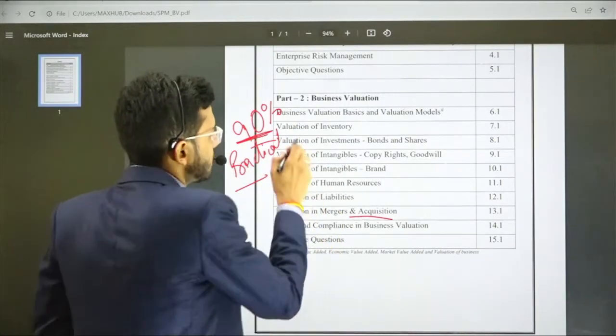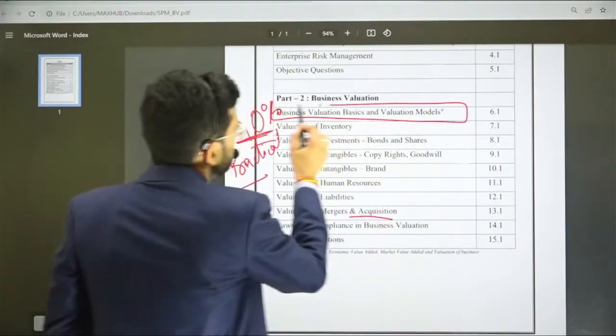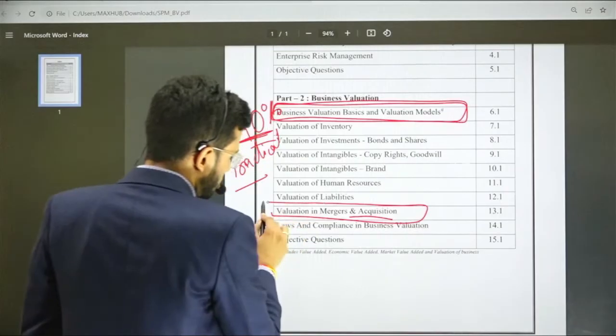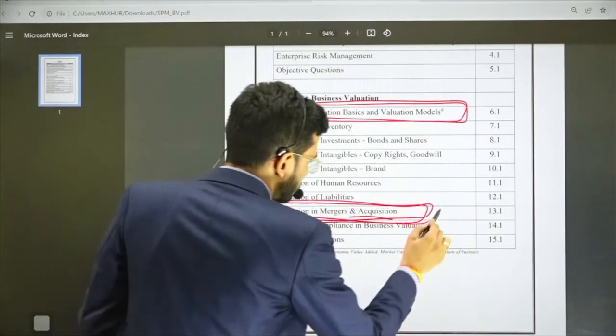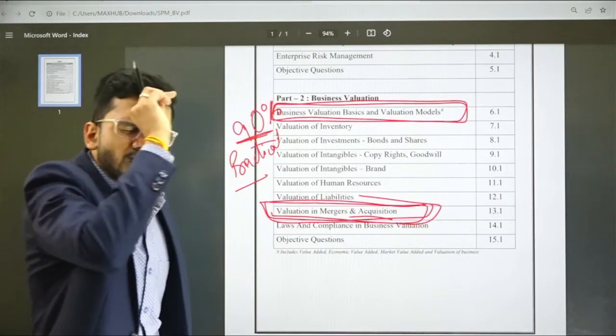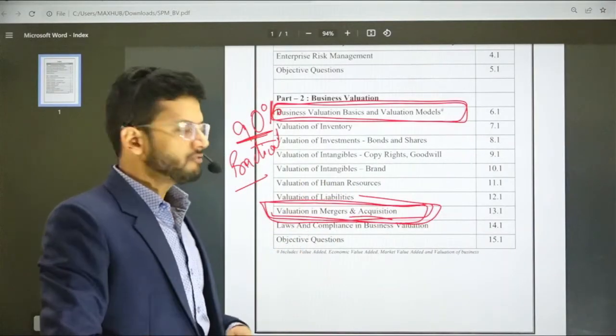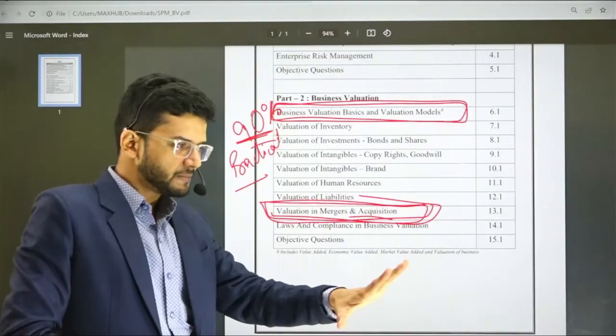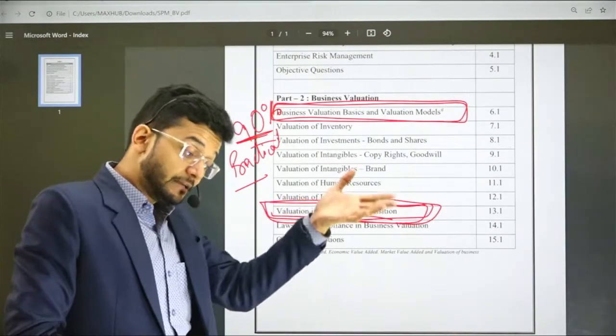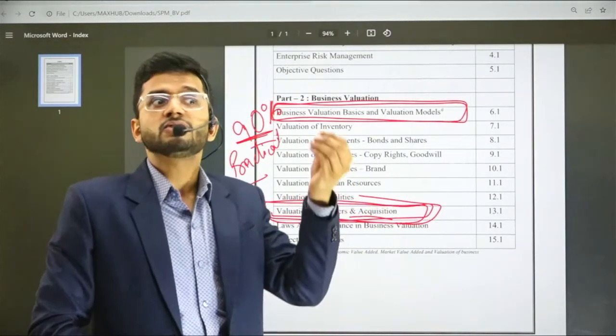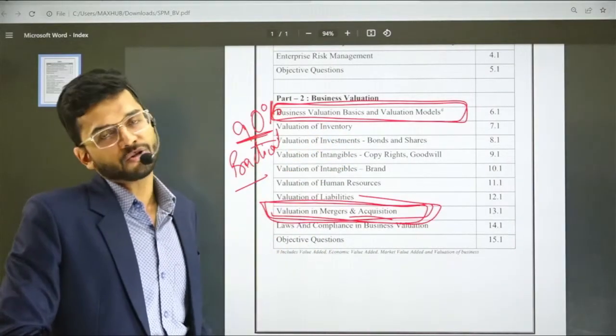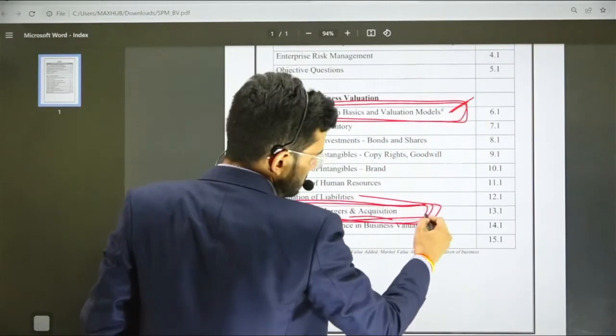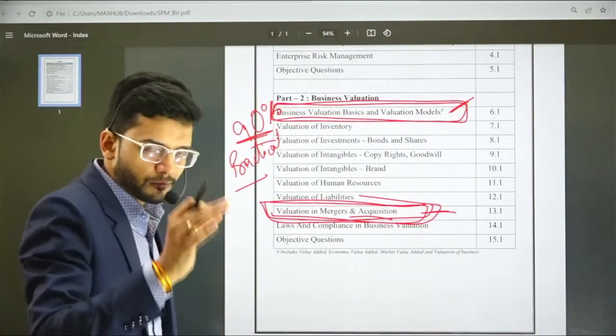The most important chapters are chapter number one, business valuation basics and valuation models, and chapter number 13, Mergers and Acquisition. This chronology is according to my book. These two chapters are most important. From Mergers and Acquisition specifically, a question is bound to come in your examination. In every attempt it has been coming, sometimes to the tune of 15 marks, 16 marks, or 20 marks. That is the extent of importance of this chapter.